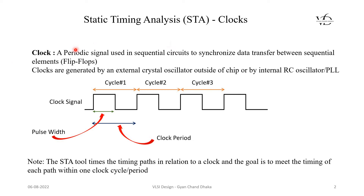If you see here, this is our clock signal. From the first rising edge to the second rising edge, this is clock cycle one; from the second rising edge to the third rising edge, this is clock cycle two, and so on. This is the pulse width of the clock signal, and the duration from the first rising edge to the second rising edge is our clock period.